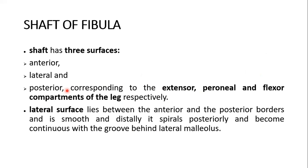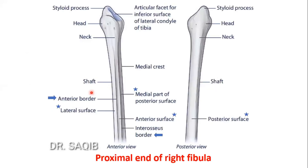The shaft of the fibula has three surfaces: the anterior surface, the lateral surface, and the posterior surface. These correspond respectively to the extensor compartment (anterior), the peroneal or lateral compartment (lateral), and the flexor compartment (posterior). Let's see the shaft. First, we'll look at the borders — this is the anterior border and this is the interosseous border. Two borders are visible. This is the lateral surface and this is the medial part of the posterior surface. This is the anterior surface and here is the posterior surface.